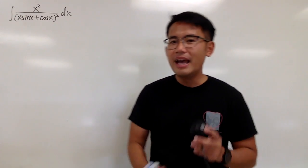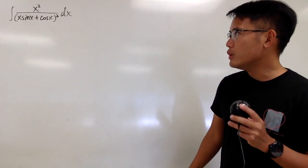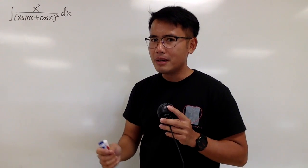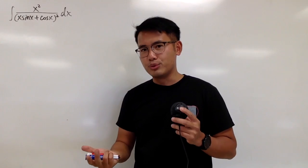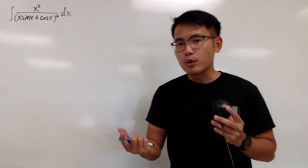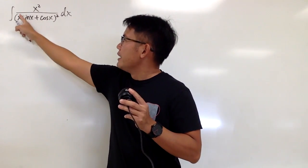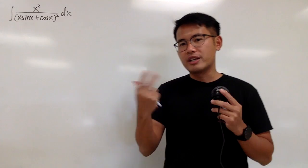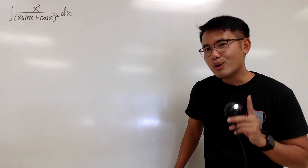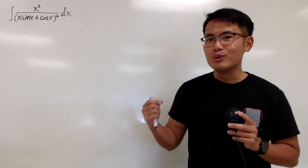Hopefully you guys had a chance to try this. Before I show you how I solve this, I would like to ask you to subscribe if you haven't done so already. I noticed that in the denominator we have this to the second power, so it kind of reminds me of a quotient rule situation, because when you differentiate a quotient you will have the bottom squared. So to undo the quotient rule situation, I can also use integration by parts.